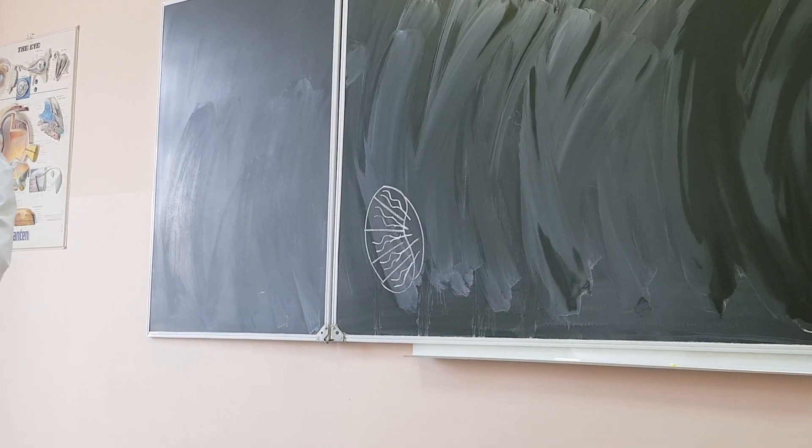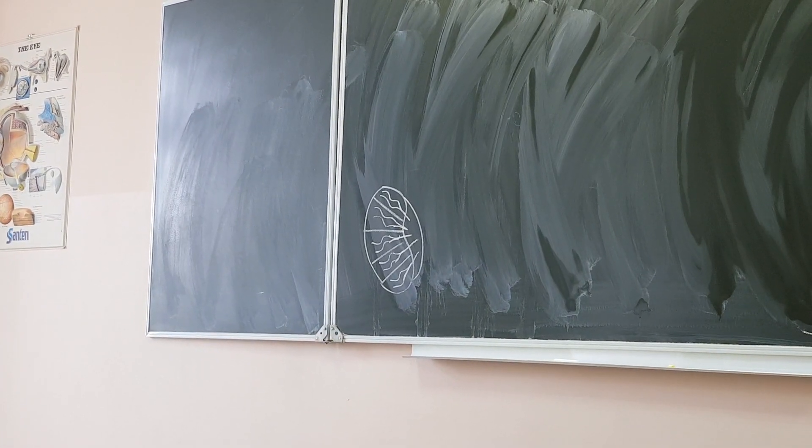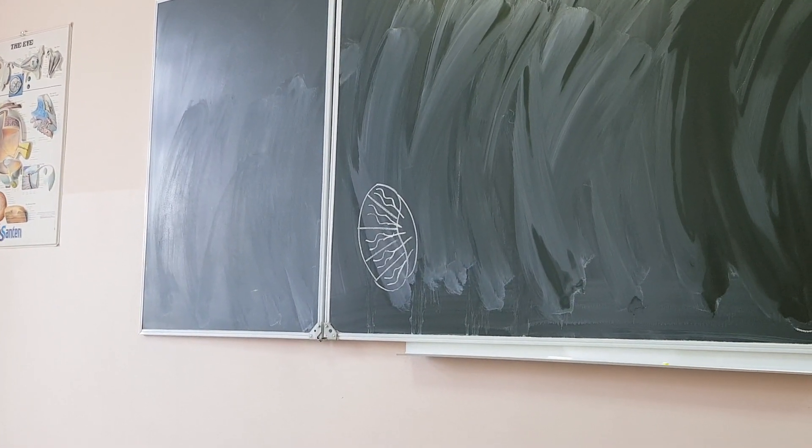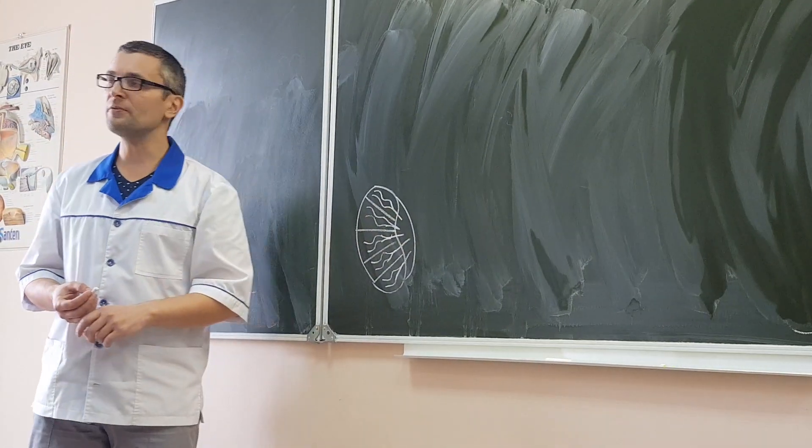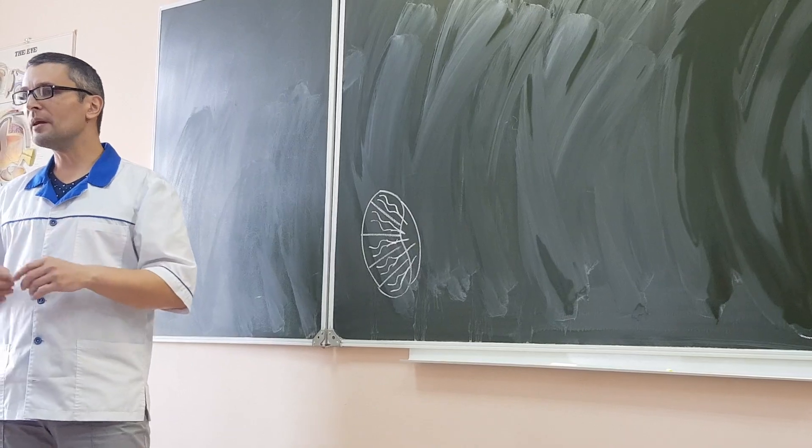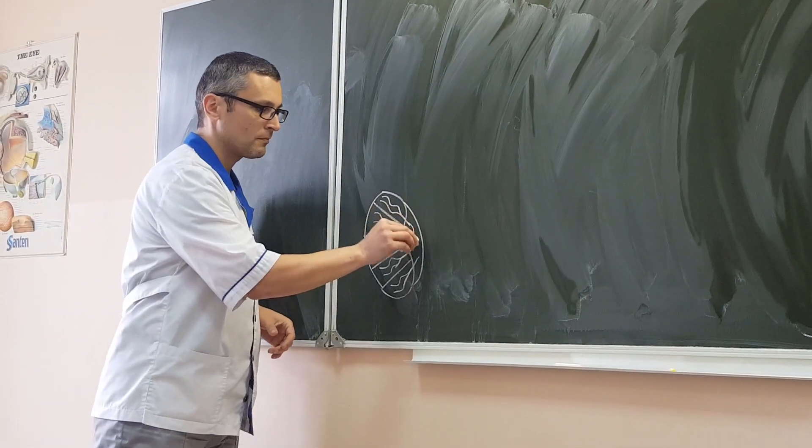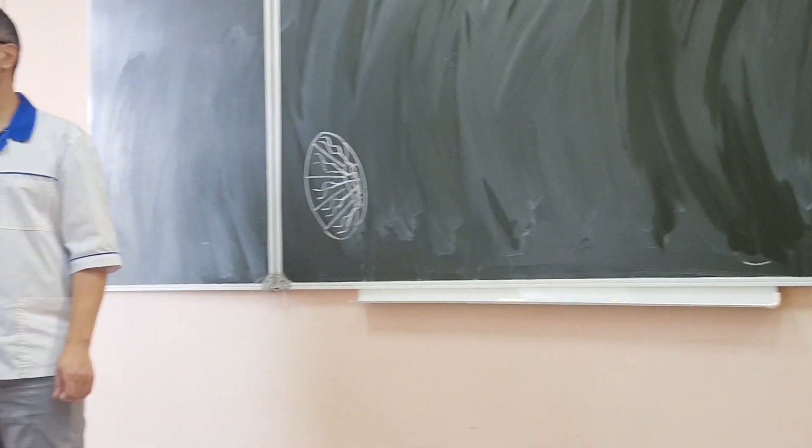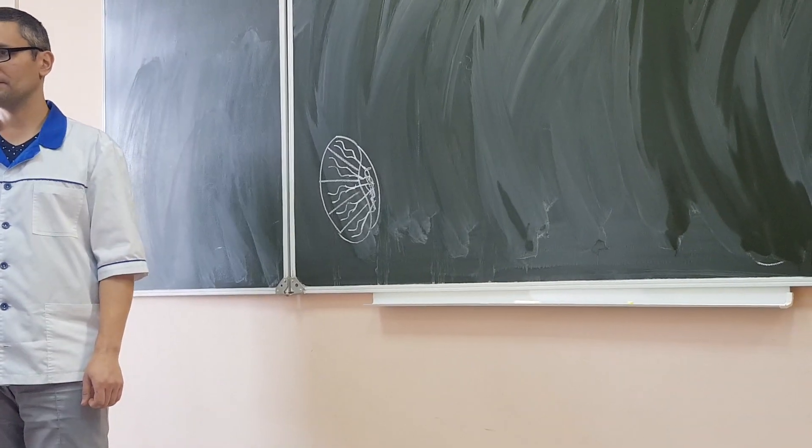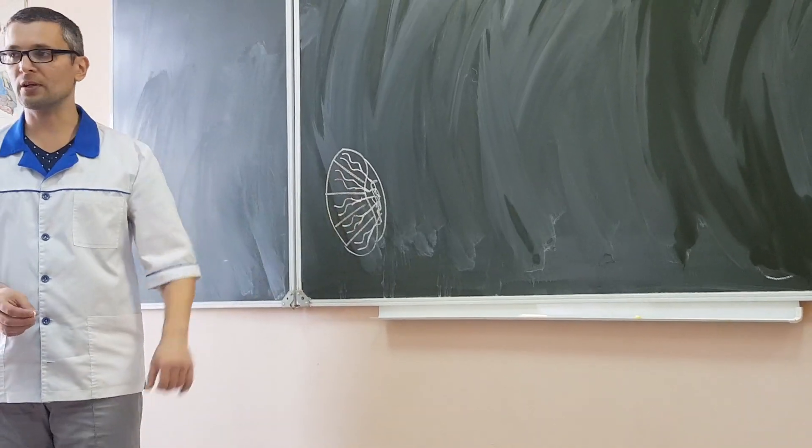So mediastinum is not only here, in the chest, in the thoracic cavity, but in the testis also. And in the mediastinum testis, all these tubules seminiferous recti make network. Network, which is called rete testis. Rete means network. Network of tubules seminiferous recti.